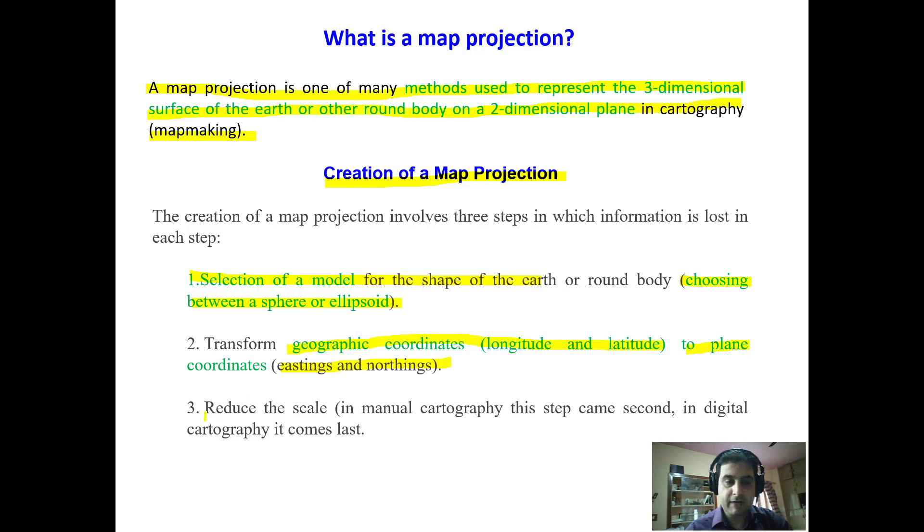Then the third one is we have to reduce the scale because the earth itself is very big and it has to be reduced to a small 2D surface. Now in manual cartography reduction in scale is the second step whereas in digital cartography it comes as the third step.